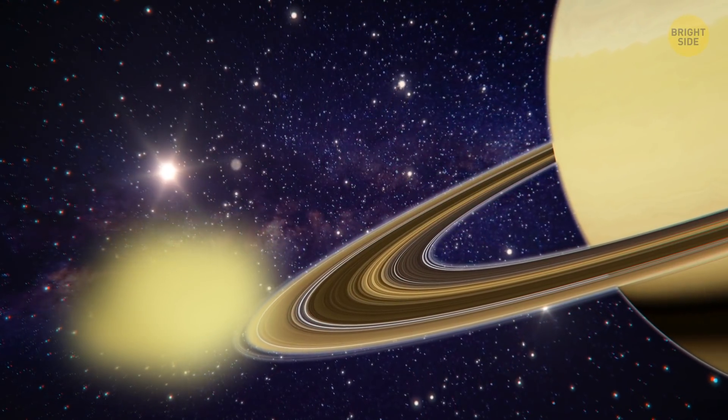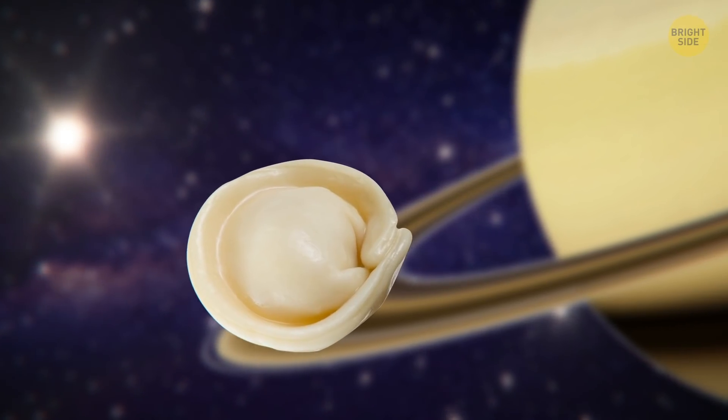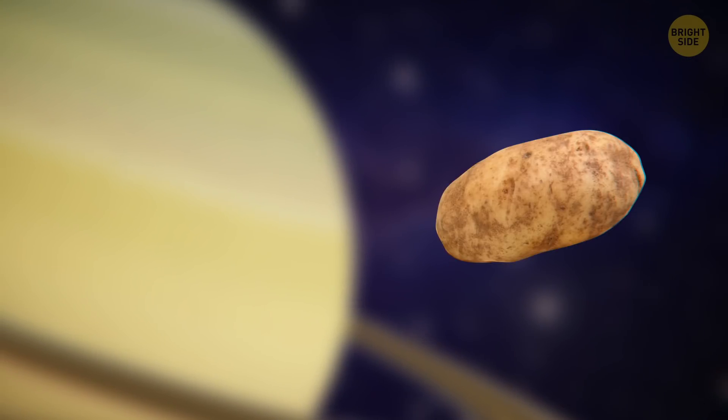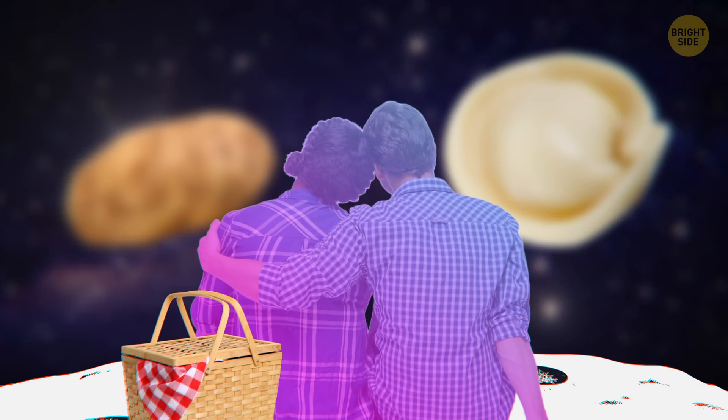Or you could settle down on Saturn's other moon, Pan. If you're a fan of ravioli, it looks just like one. There's also Prometheus, Saturn's potato-esque moon. Imagine seeing all these weird shapes in the night sky from the planet's surface.